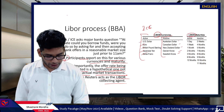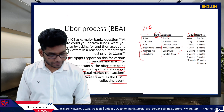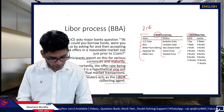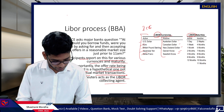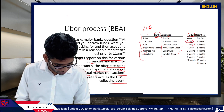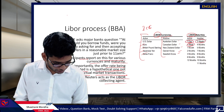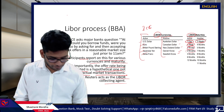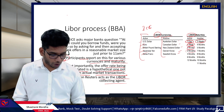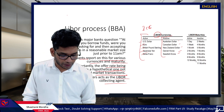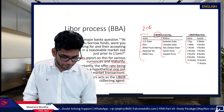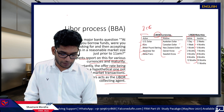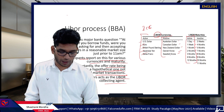LIBOR maturities also have active and inactive categories. Previously, maturities ran from one day, one week, two weeks, one month, two months, three months, four months, and all remaining months. Current active rates are only for one day, one week, one month, two months, three months, six months, and twelve months — these are the rates still active after ICE took over administration.